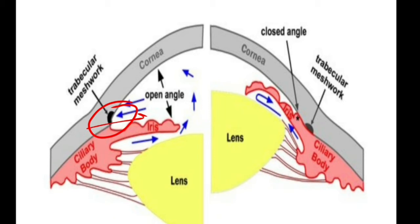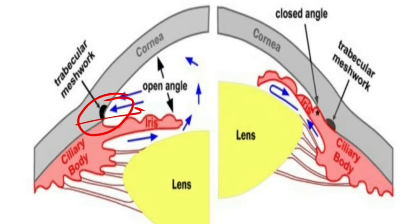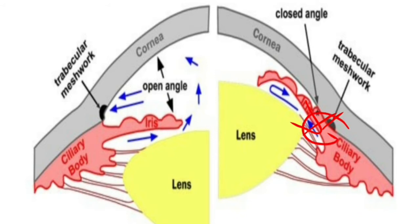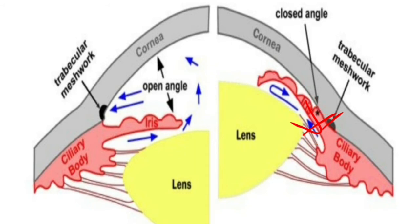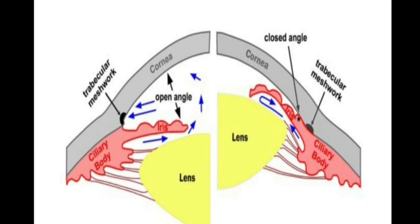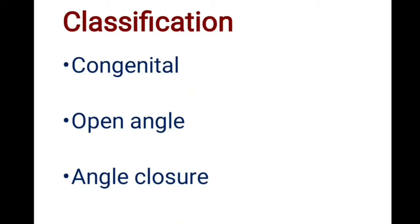This type is called open angle glaucoma, where you can see all the angle structures on gonioscopy. In the other type, the iris is directly opposed to the cornea and you can't make out the trabecular meshwork — it's obvious that aqueous can't drain through the angle structure, so this is called closed angle glaucoma. There is one more variety called developmental glaucoma, where the mechanism is completely different. So glaucoma can be classified as congenital, open angle, and angle closure.